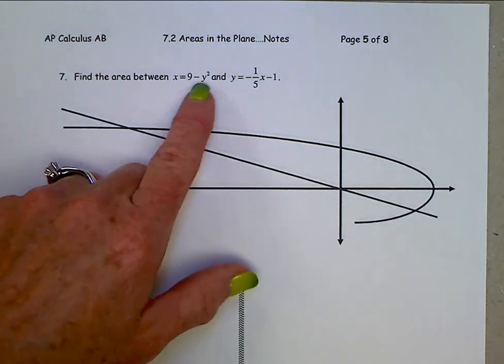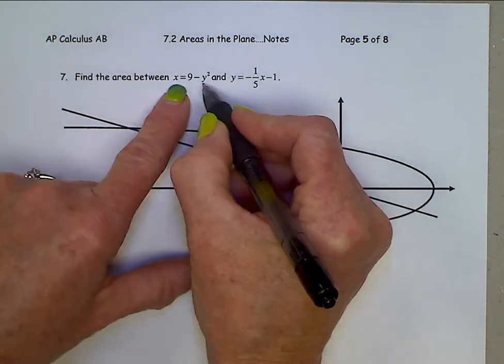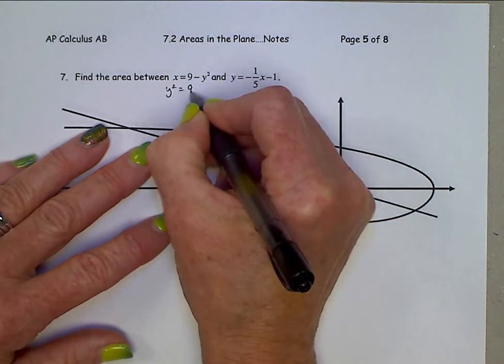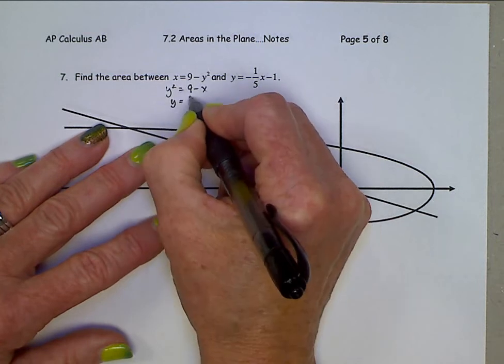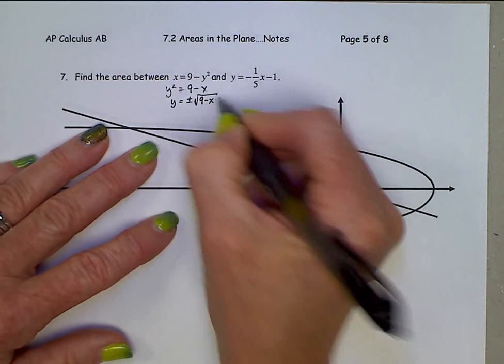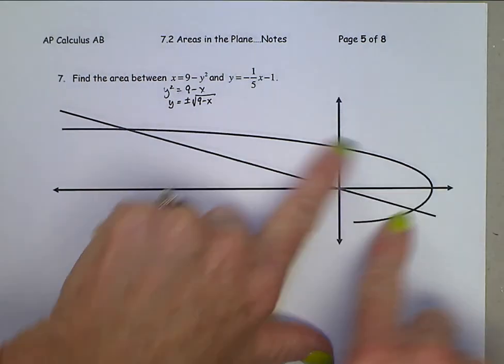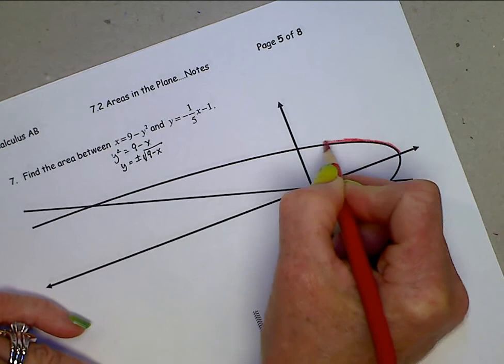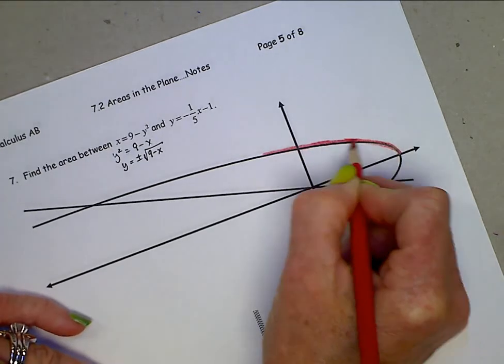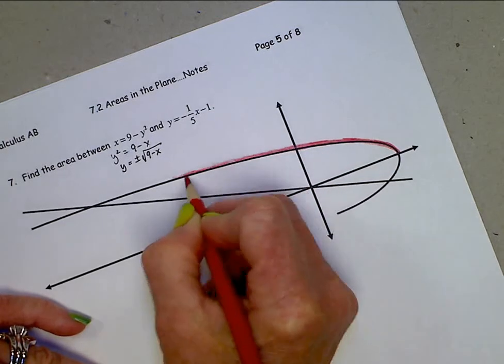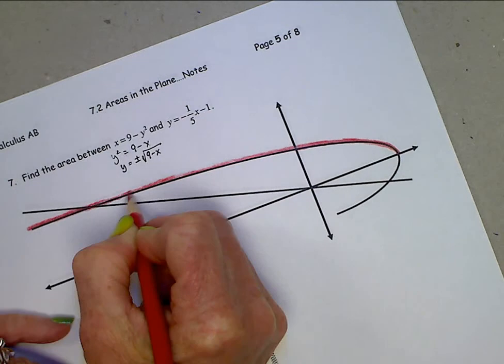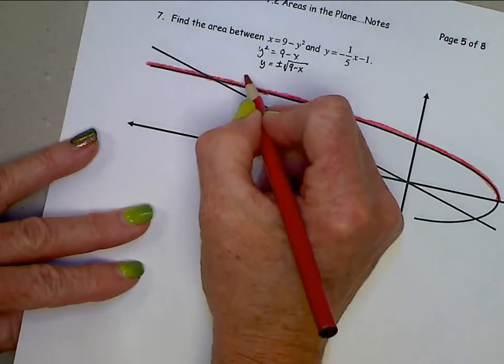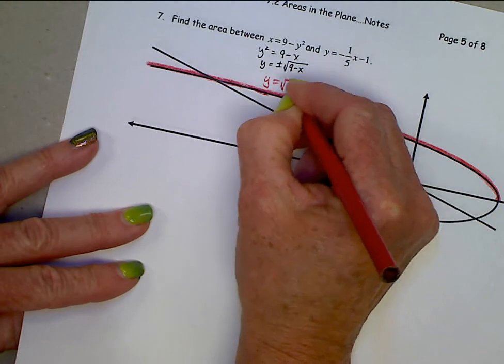So if we look at this one right here, this 9 minus y squared equals x, let's solve for y. I'm going to pull this y squared over here, y squared is 9 minus x, and then square root both sides. The y is plus or minus the square root of 9 minus x. That's these two curved pieces. So we have this top piece, and I'm just going to kind of darken over it in red.